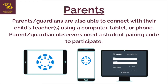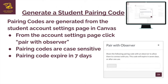Parents, you're also able to connect with your child's teacher using a computer, tablet, or phone. Parent or guardian observers will need a student pairing code to participate. A student pairing code is generated from your child's account settings page. Your child will go to their account settings page and click Pair with Observer. Once the pairing code is generated, the observer will use this code to create their account and begin participating. Pairing codes expire in seven days, at which time a new code must be generated.